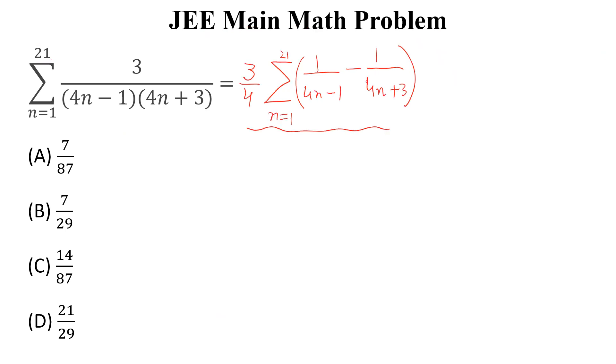Now we can expand this and this is equal to 1 over 3 minus 1 over 7, plus if we put n equals 2, 1 over 7 minus 1 over 11, if we put n equals 3, 1 over 11 minus 1 over 15.